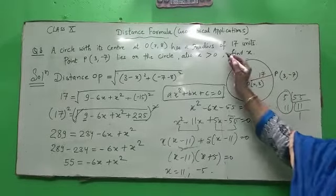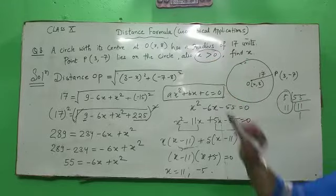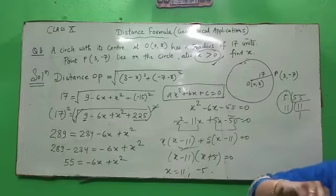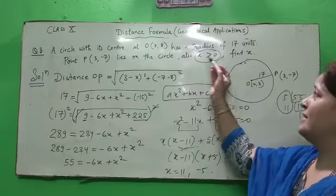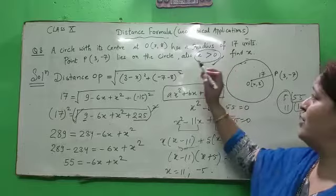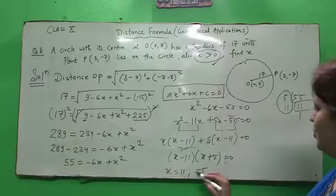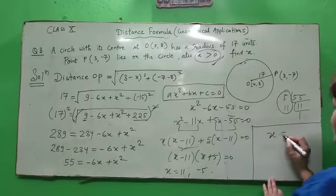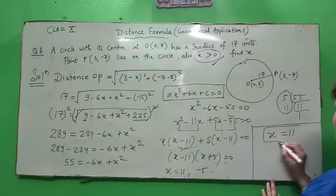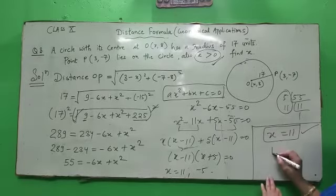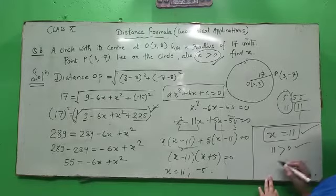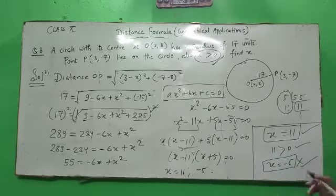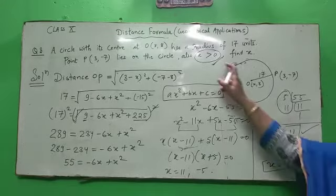But again we will look at the condition. X's value, what should it be, must be greater than 0, greater than 0 it should be, X's value. Greater than 0, that means value of X must be positive. So between 11 and minus 5, which value should we choose? So X's value we should choose 11, because it is a positive value. That means 11 is always greater than 0. And X's value minus 5 which came, we will cancel it. We will neglect this value because we had a condition with us.